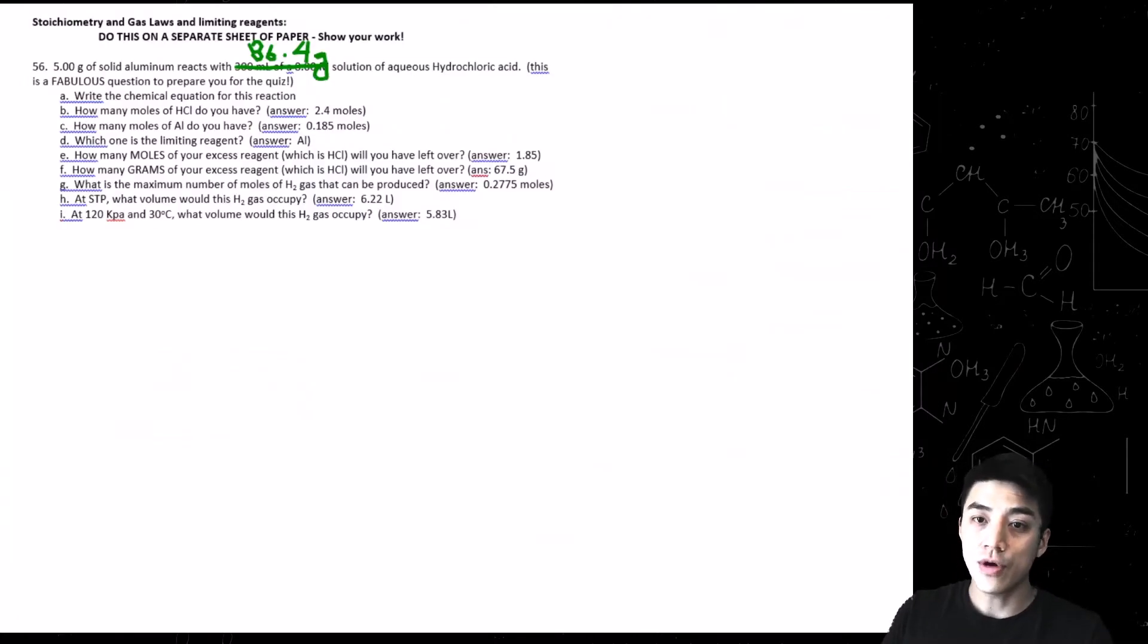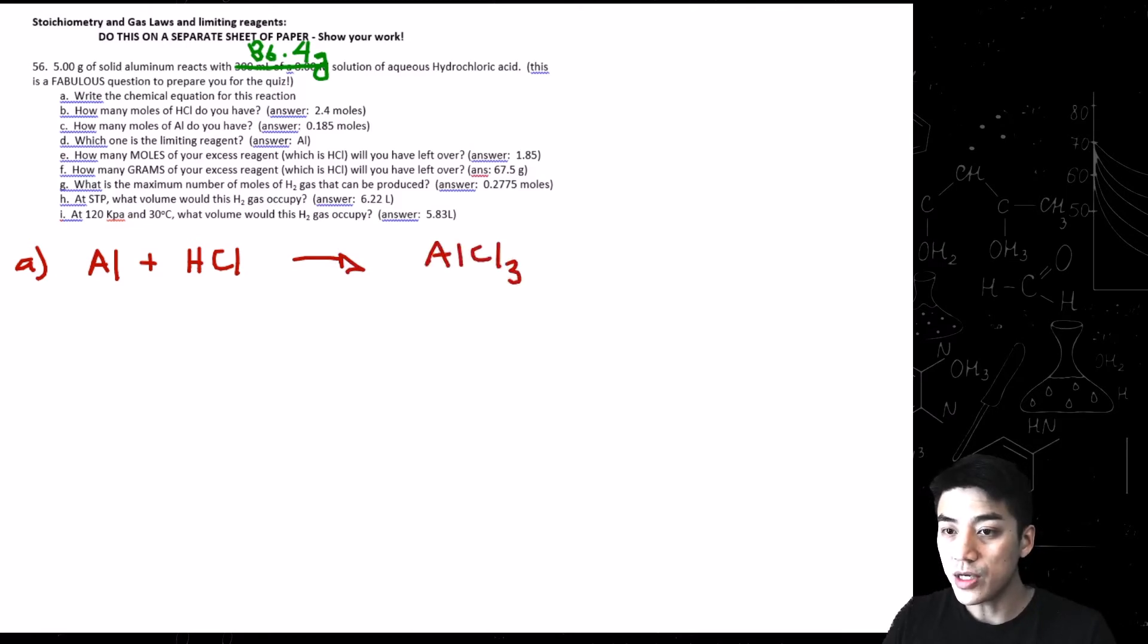Number 56, 5 grams of solid aluminum reacts with 86.4 grams of hydrochloric acid. Let's work out letters A through I, and letter A is write the chemical equation for this reaction. It's going to be a single displacement reaction. So Al plus HCl makes AlCl3, and then H2 gets displaced. And then you just want to figure out what the balanced equation is by putting in the coefficients. And again, this is all review, so make sure you watch my Chapter 10 playlist to figure out how to balance equations and predict the products.